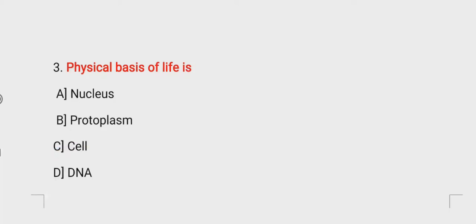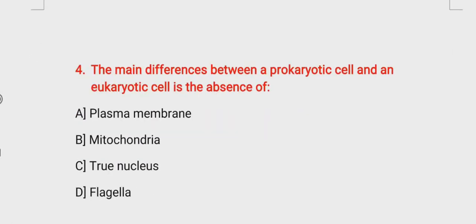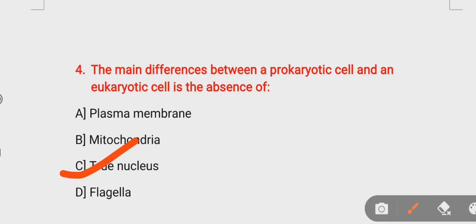Question number four: the main difference between a prokaryotic cell and a eukaryotic cell is the absence of — option A: plasma membrane, option B: mitochondria, option C: true nucleus, option D: flagella. The right answer is option C, true nucleus. In prokaryotic cells, the true nucleus is absent, but in eukaryotic cells, the true nucleus is present.